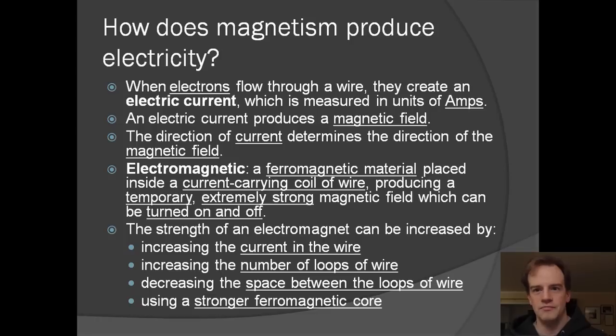So how is it that magnetism also produces electricity? And this is what scientists call electromagnetism. And when electrons flow through a wire, they create an electric current. And that electric current produces a magnetic field. The direction of current will determine the direction of the magnetic field. We can use this to make an electromagnet. And this is a ferromagnetic material that's inside a current-carrying coil of wire. And this produces a temporary but extremely strong magnetic field which can be turned on and off.